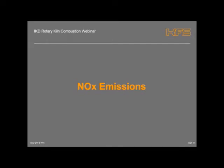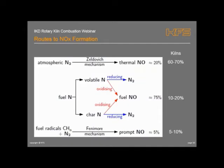I'll finish off with just one section on NOx emissions. A lot of you will be familiar with the routes for NOx formation. The prime mechanism for production of NOx in the combustion process is taking nitrogen — which is part of the air feed primarily — and heating it up in the presence of oxygen to produce NOx. So a significant portion in kilns is produced by thermal NOx: the higher the temperature in the combustion zone, the more NOx you produce.